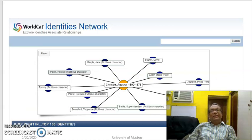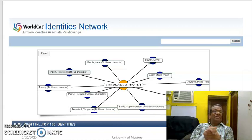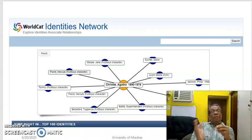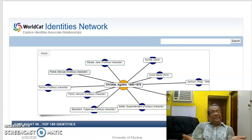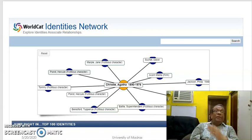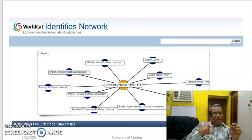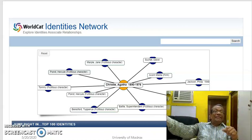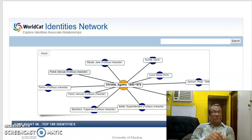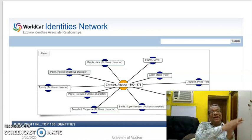In WorldCat also, for example, if you have identified an author like Robert Merton and you search for him, it will show you who all the people are who have influenced Merton. Similarly, they have shown Agatha Christie — who influenced her and who was influenced by her. By looking at the map, you clearly know who Agatha Christie referred to in her work, and who among researchers used her ideas.